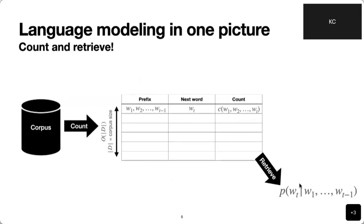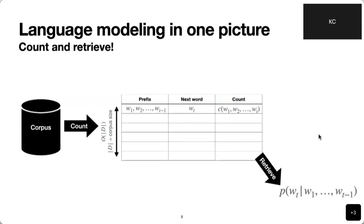What is language modeling? It's really all about count and retrieve. We start from a training corpus, build a gigantic count table, and at test time retrieve the relevant information to compute the next word probability. This is not a new idea at all — it has been known since at least 1950, when Claude Shannon computed the entropy of English at the character level.